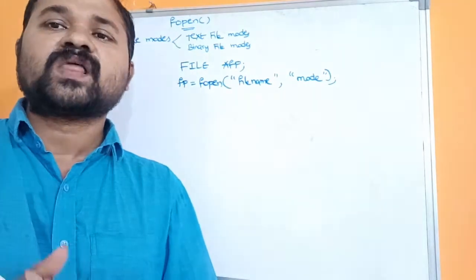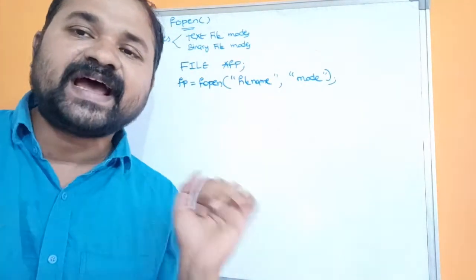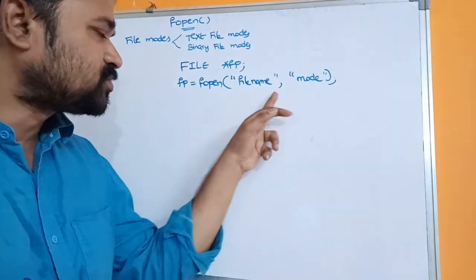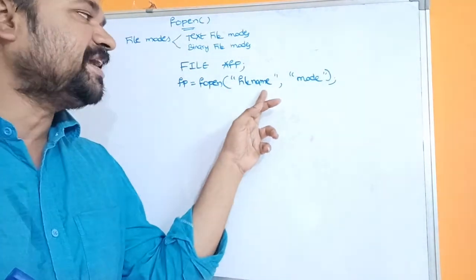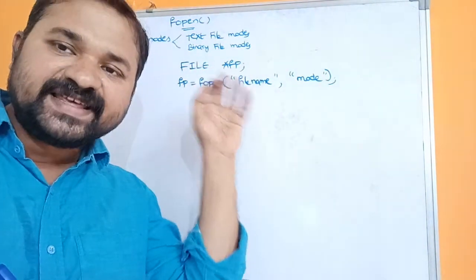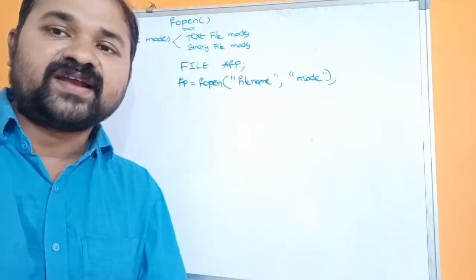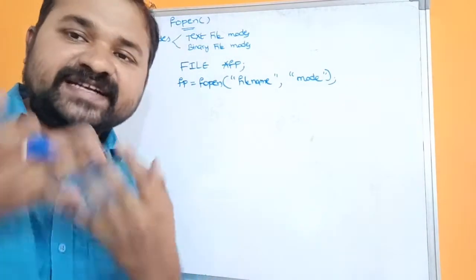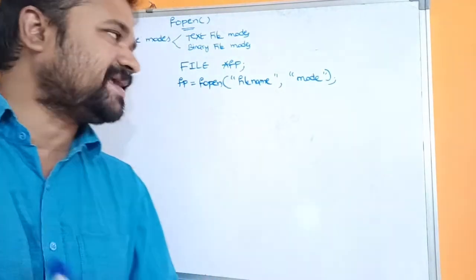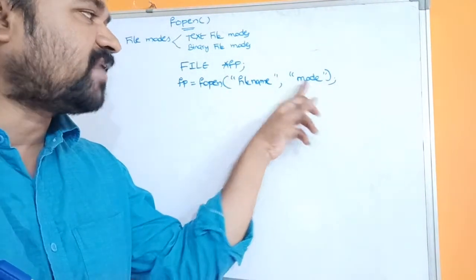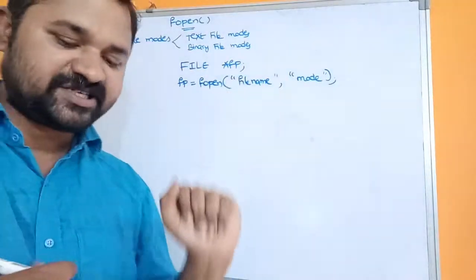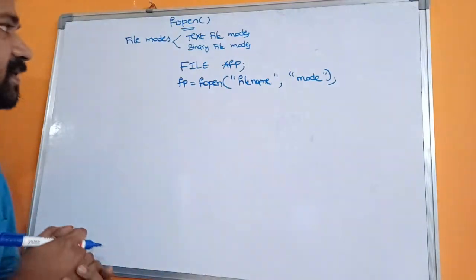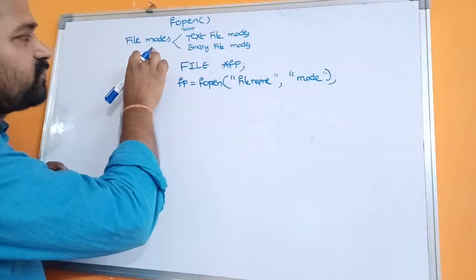The fopen function accepts two parameters. We need to specify the file name with the extension — if it is a C file then we specify the extension as .c, if it is a text file then .txt, and so on. We also need to specify the mode within double quotations.